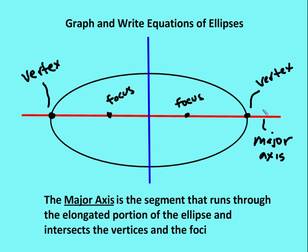The major axis is this red line. It runs through the elongated portion of the ellipse. So different from a circle where you have some center and every point is equidistant from the center, in this case you have really two kind of centers, and the sum of the distances is going to be the same throughout the ellipse. So the major axis runs through the vertex and the two foci, and the vertices are on the major axis.